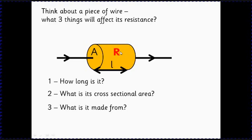They'll have a different resistance according to what the metal is. The key thing to understand is that resistivity is the property of the metal. It's a little bit like density — if I told you the density of copper you could work out the mass of any size piece of copper. So if you know the resistivity of copper you could work out the resistance of any copper wire, as long as you knew its area and its length.